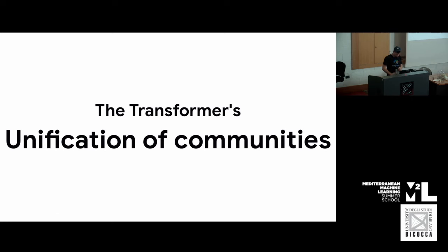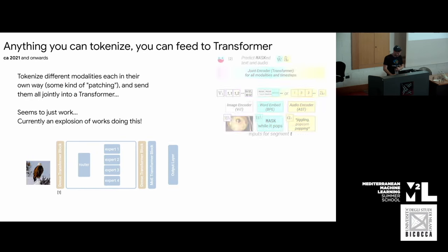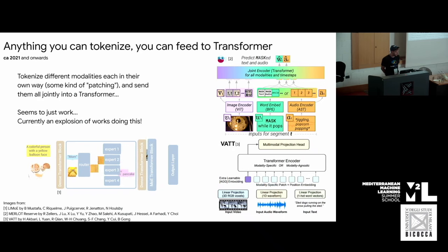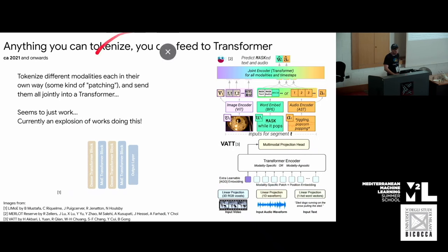Now all the different communities have found a way to use essentially the plain transformer for their models. This also means communities can mix — especially vision and language. Basically anything you can turn into a token, you just turn it into a token and throw it into the transformer. It doesn't even matter what the other tokens are — as from videos, for example.